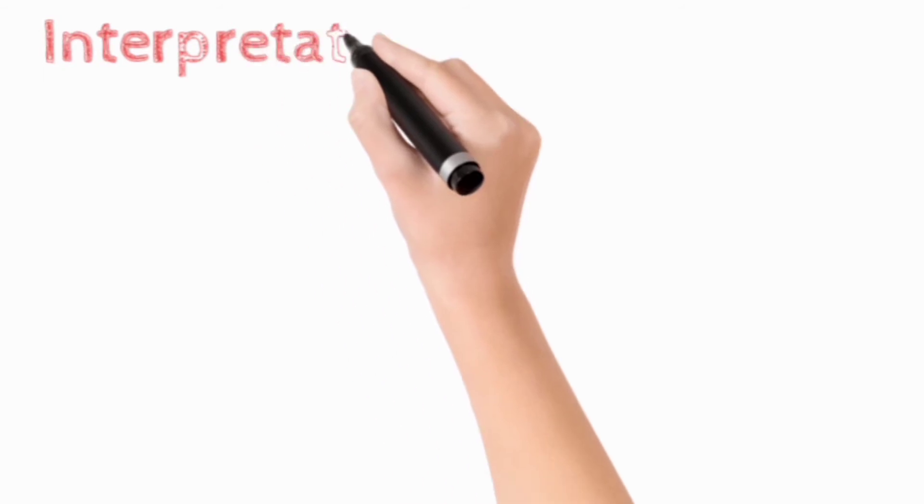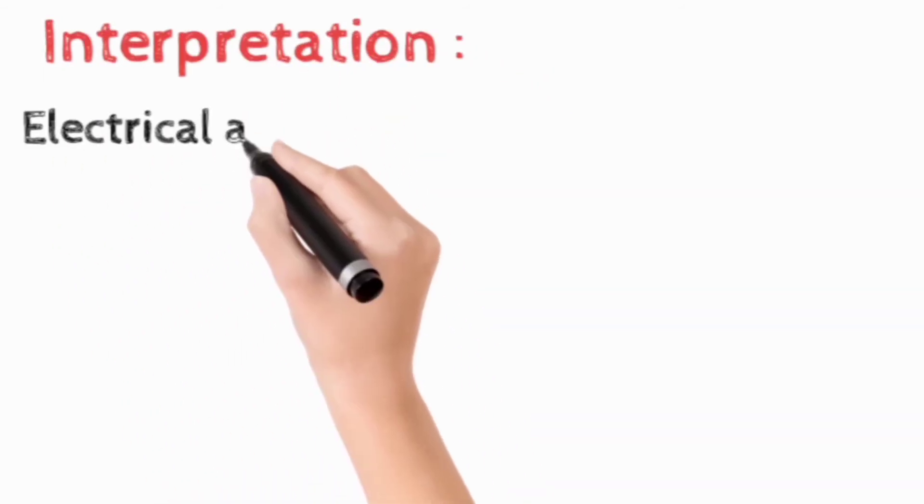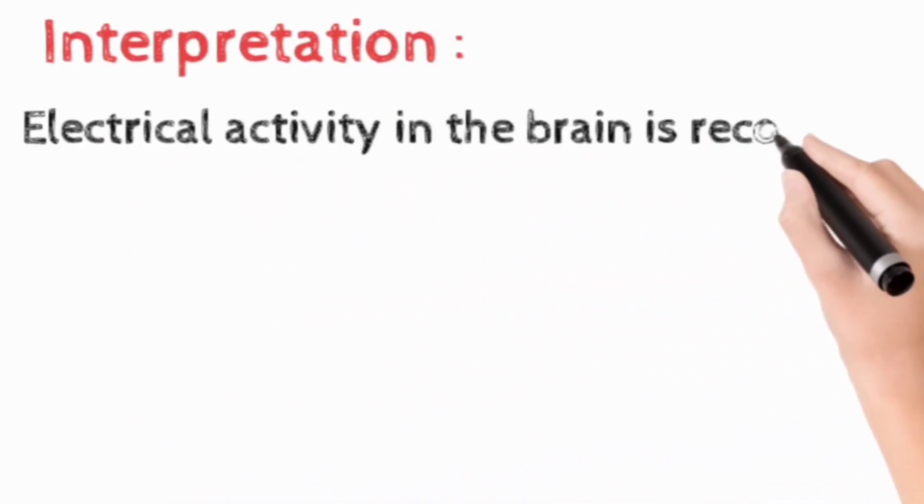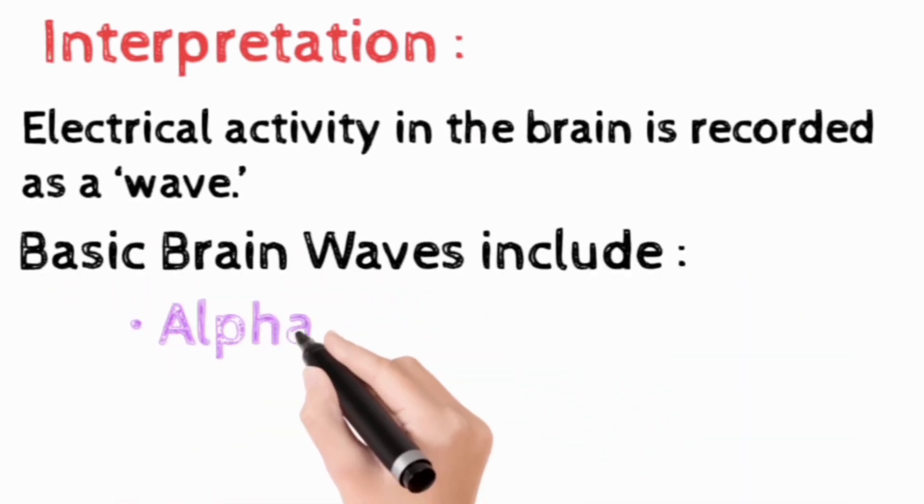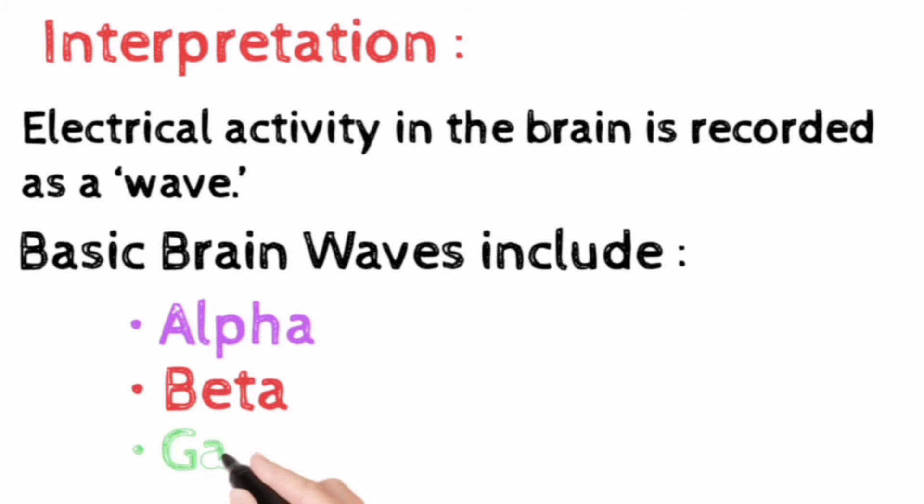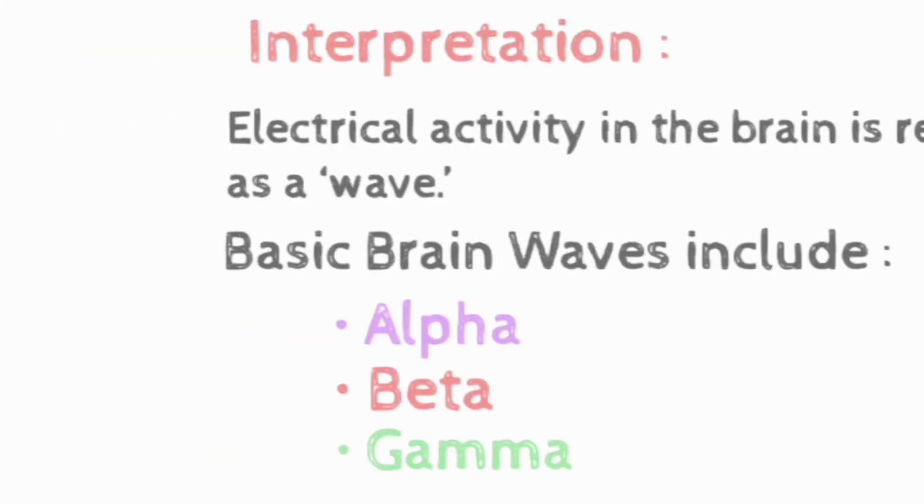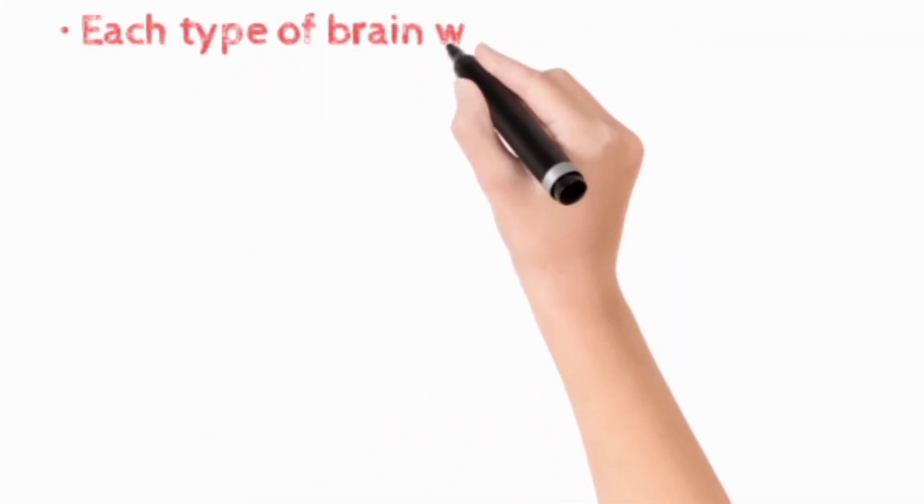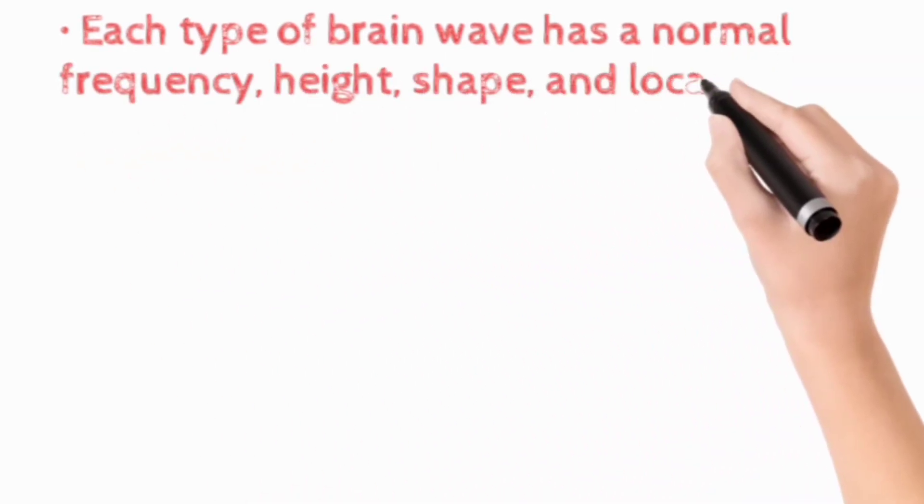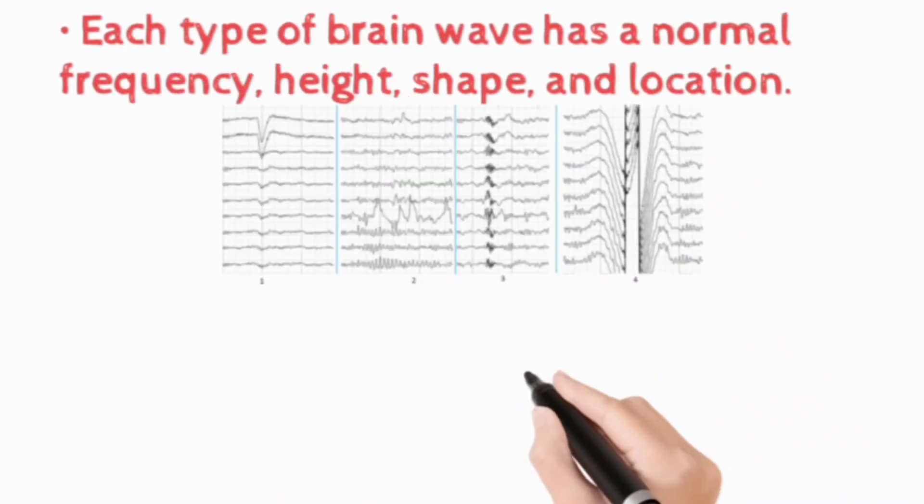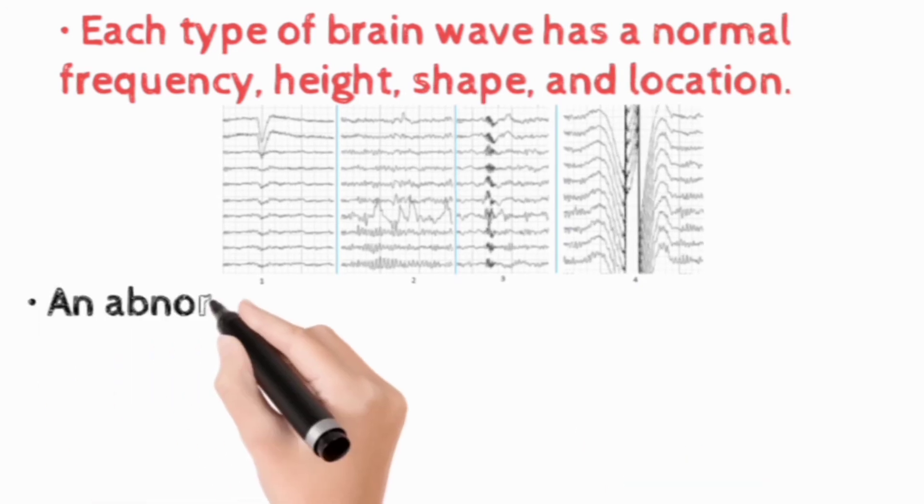So how do you interpret your EEG test? The electrical activity of the brain is recorded as waves. Basic brain waves include alpha waves, beta waves, and gamma waves. Each type of brain wave has a normal frequency, height, shape, and location.